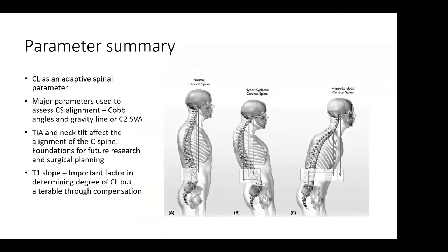Cervical lordosis can be thought of as an adaptive spinal parameter — patients are using it to help maintain their horizontal gaze despite what's happening in the thoracolumbar spine and pelvis. The major parameters used to assess alignment — the TIA and neck tilt — affect cervical spine alignment and are forming the foundations for future research as correlates to pelvic parameters. T1 slope in particular is an important factor in determining the degree of cervical lordosis, just as pelvic incidence and lumbar lordosis are so intricately tied. Importantly, this is alterable through compensation below.